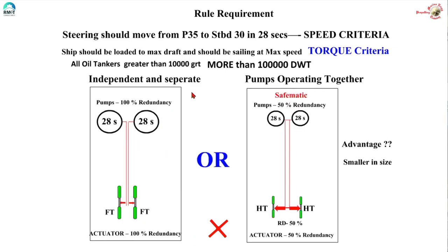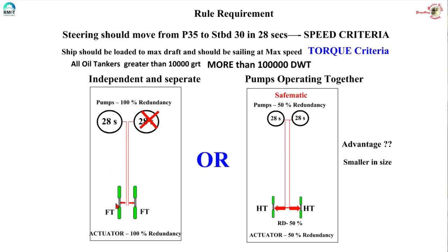Moving on to oil tankers greater than 10,000 GRT and above 100,000 DWT. Here we have two options. The first is to fit two independent actuating systems — each with its own pump and actuator, completely independent of each other. These two sets of two-ram steering both operate the same tiller. When all four rams are operating, we get the full torque. If one system fails or is put out, the ship is still able to turn the steering gear in 28 seconds with full torque, meeting the minimum rule requirement. So we have 100 percent redundancy on each system.